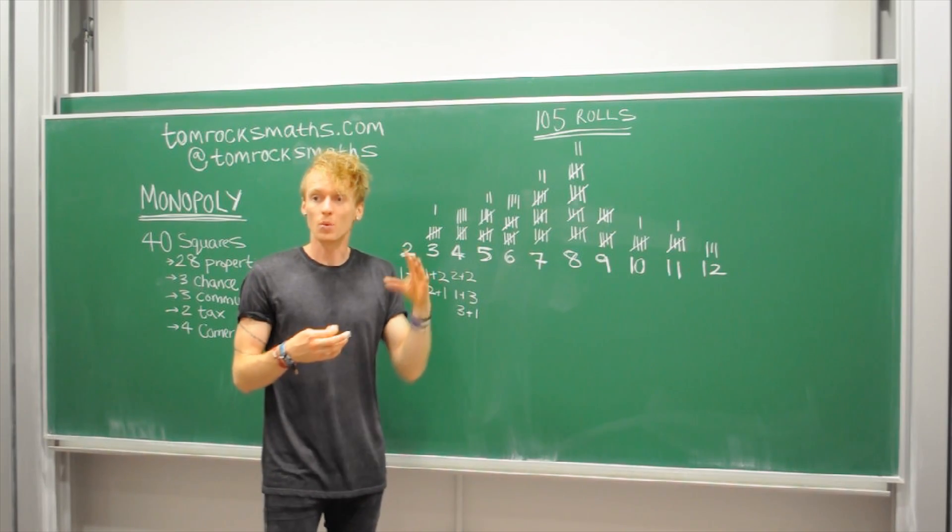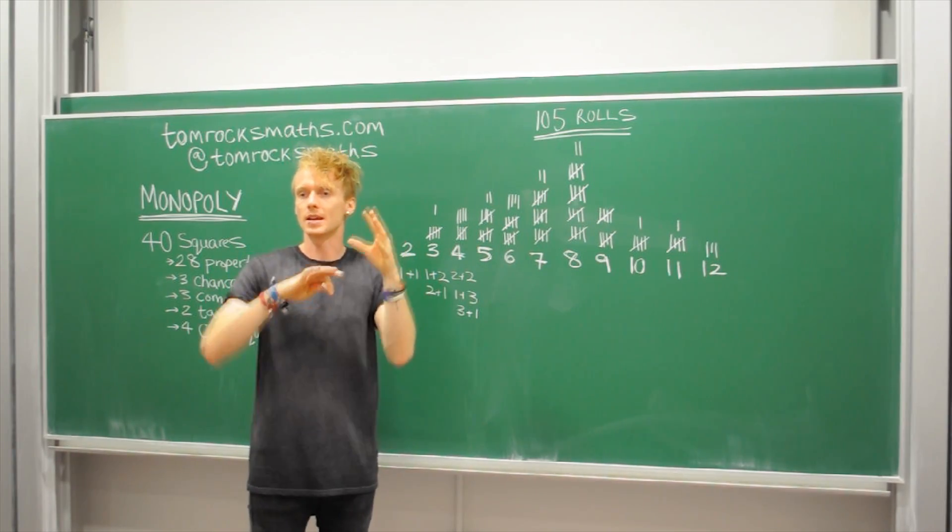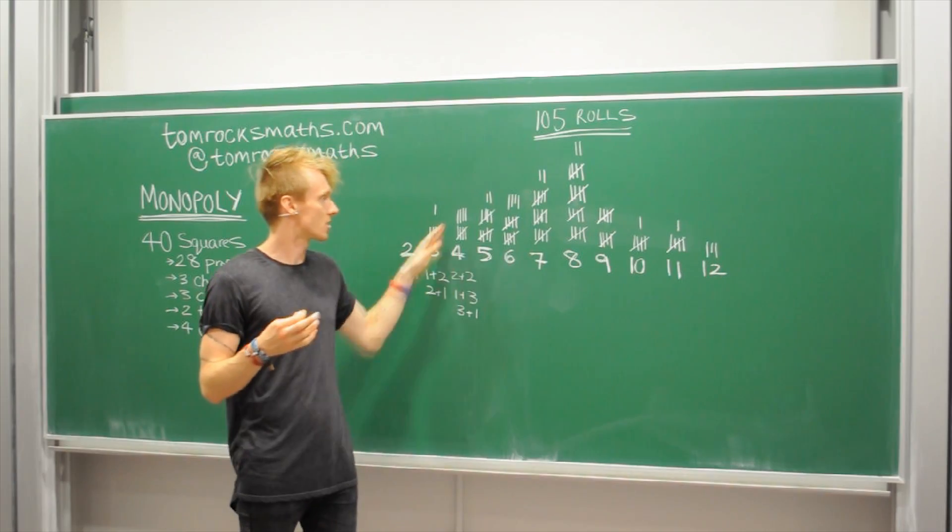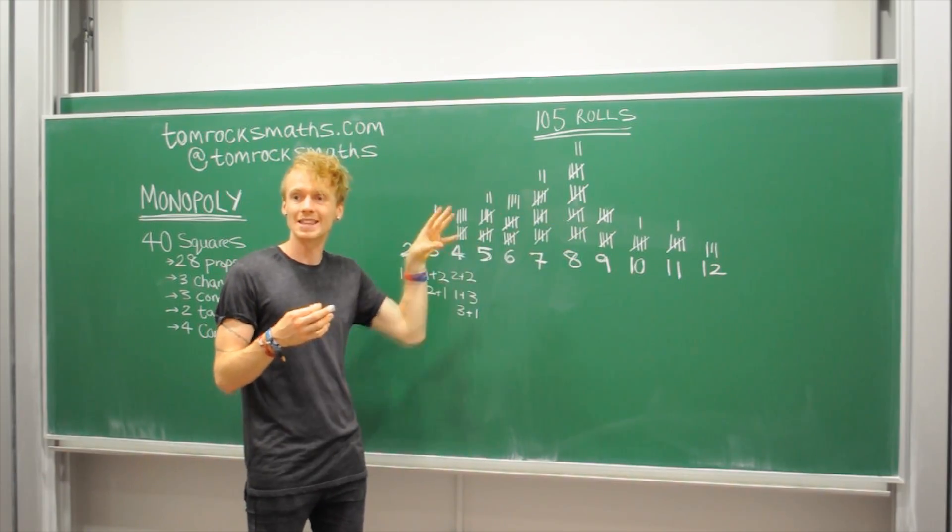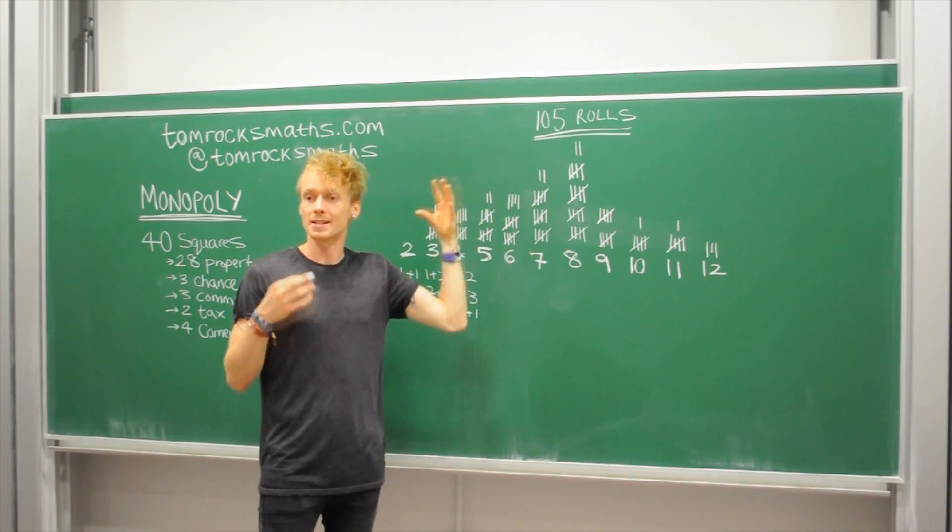And if I continued like this following the same pattern just thinking about how you can make that number using two dice we should hopefully get a very similar looking distribution, a very similar looking shape as to what I got in the real experiment in my tally chart.